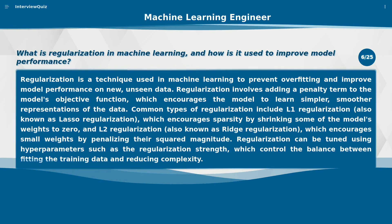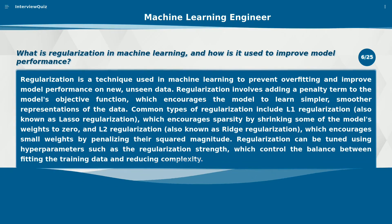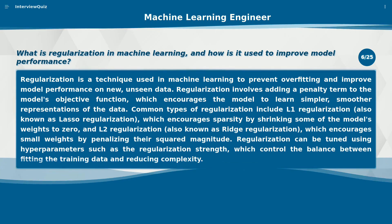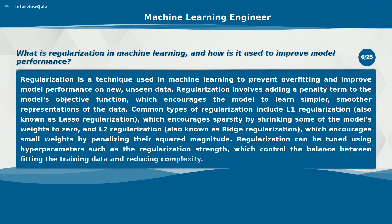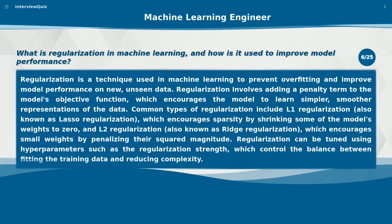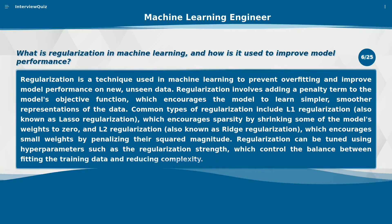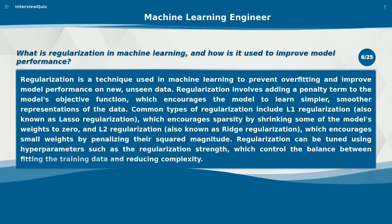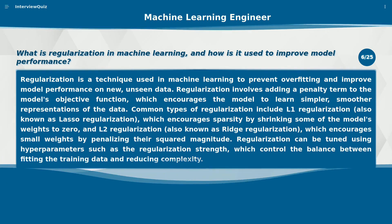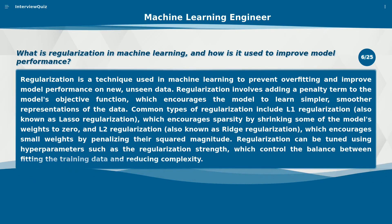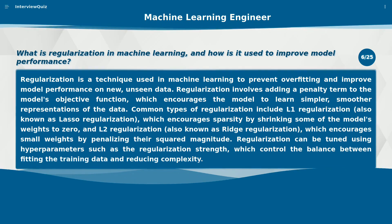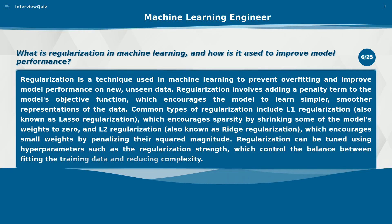What is regularization in machine learning and how is it used to improve model performance? Regularization is a technique used in machine learning to prevent overfitting and improve model performance on new, unseen data. Regularization involves adding a penalty term to the model's objective function, which encourages the model to learn simpler, smoother representations of the data.